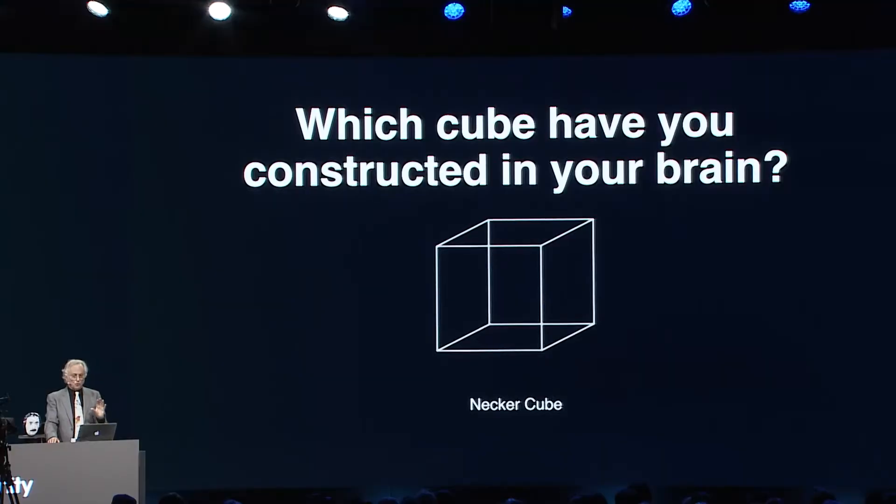This is a famous illusion, the Necker cube. In the real world, it's just a two-dimensional pattern of pixels on a screen, but what you see is a three-dimensional cube. There are two alternative cubes which are equally compatible with the two-dimensional pattern of lines. Half of you are now seeing one of the two cubes; the other half have constructed in your brain the other possible cube. If you look for a while, you'll see it flip from one orientation to another. The VR software in the brain is capable of constructing two virtual images, both equally compatible with the two-dimensional pattern of the retina, and what it does is alternate.